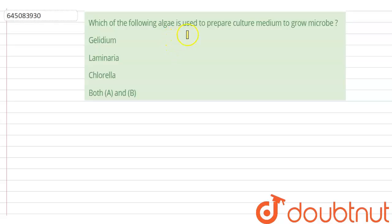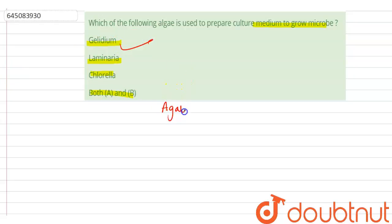Hello students, the question is: which of the following algae is used to prepare culture medium to grow microbes? The options are gelidium, laminaria, chlorella, and both A and B. The correct option is gelidium.